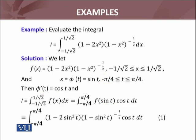Now I will substitute my f of x. My f of x has x replaced by sin(t). So it becomes: (1 minus 2 sin squared t) times (1 minus sin squared t) raised to the power minus 1 by 2, and dx is replaced by cos(t) dt.